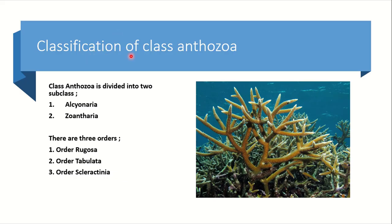Now the classification of Class Anthozoa. Class Anthozoa is further divided into two subclasses and three orders. The two subclasses are Alcyonaria and Zoantharia. And there are three orders: Order Rugosa, Order Tabulata, and Order Scleractinia.